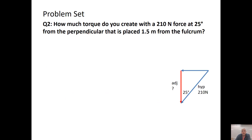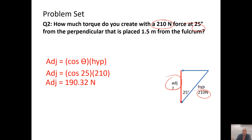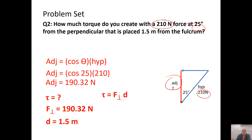Problem 2: How much torque do you create with a 210-newton force 25 degrees from the perpendicular, placed 1.5 meters from the fulcrum? First find the perpendicular component: cosine(25°) times 210 newtons equals 190.32 newtons. Make sure you're in degrees. Then solve for torque: 190.32 times 1.5 equals 285.48 newton-meters.